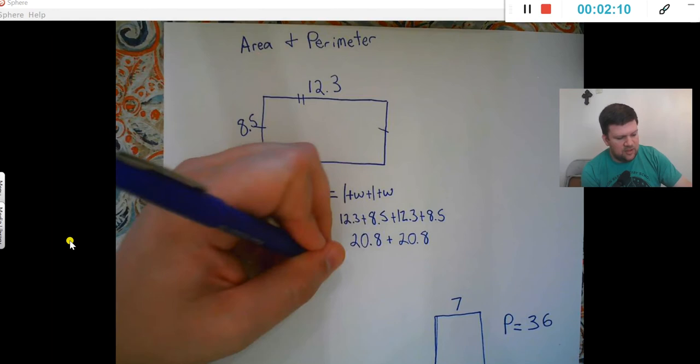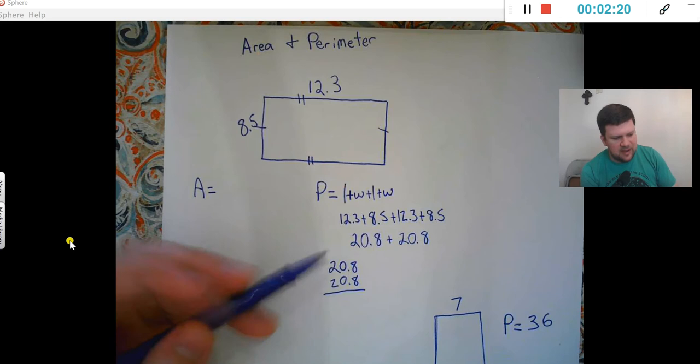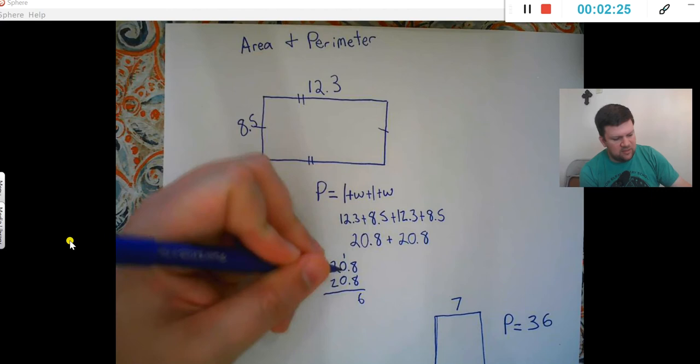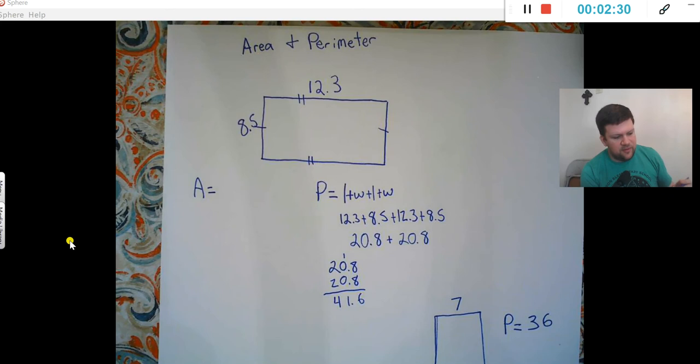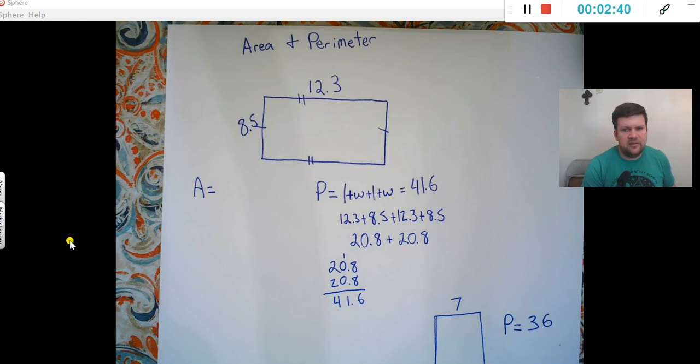I'm adding those up. Remember 8 tenths plus 8 tenths. We'll go ahead and stack that. When I'm adding, just like adding dimes, 8 dimes plus 8 dimes gives you $1.60. So that's 6 tenths carry the 1 there. And I get 41.6. So my perimeter is going to equal 41.6.